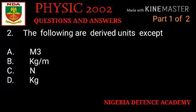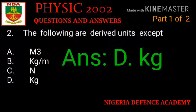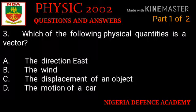Question number two: the following are derived units except — which of them is not a derived unit? Question number three: which of the following quantities is a vector? Option A: direction. Option B: wheel. Option C: displacement of an object. Option D: motion of a car. Which option is the right answer?